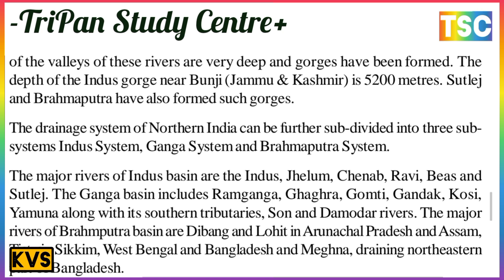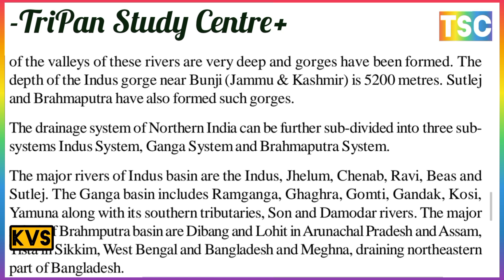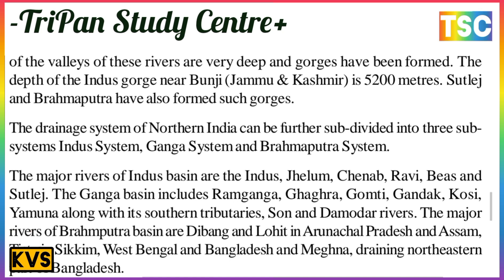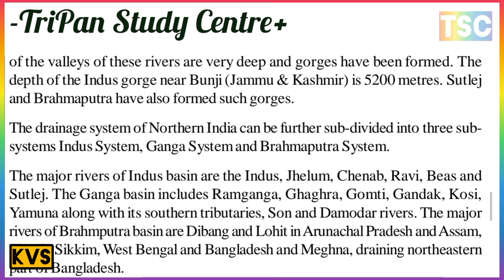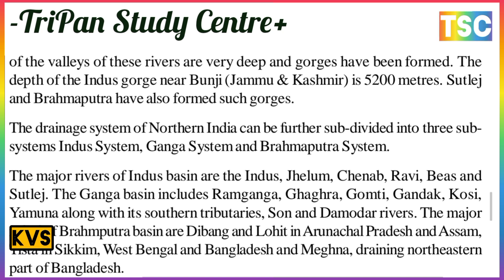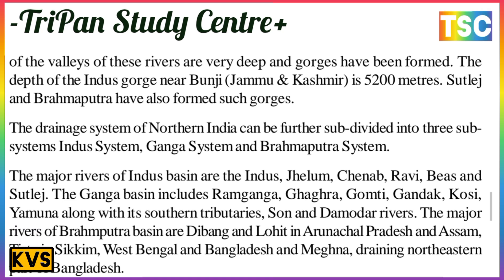The Ganga basin includes the Ramganga, Ghaghra, Gomti, Gandak, Koshi, Yamuna, along with southern tributaries, Son and Damodar. The major rivers of the Brahmaputra basin are the Dibang and Lohit in Arunachal Pradesh and Assam, Teesta in Sikkim and West Bengal, and the Meghna in the northeastern part of Bangladesh.